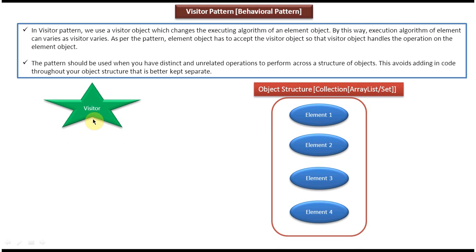So on the left side, you can see the Visitor Object. On the right side, you can see the Object Structure. An example of Object Structure is a Collection — Collection can be ArrayList or Set. This Object Structure can have multiple elements. Here you can see 4 elements: Element 1, Element 2, Element 3, and Element 4.